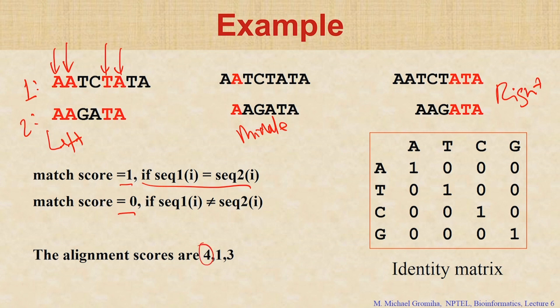If you take the second example, what is the score? 1 — because only 1 match. And the third alignment? 3 — 1, 2, 3 matches, so 3. We have the identity matrix using ATCG: if it is the same we put 1, if it is different we put 0.